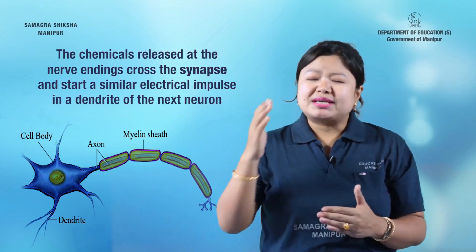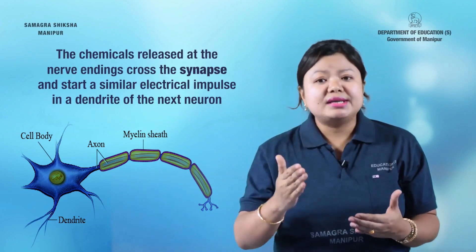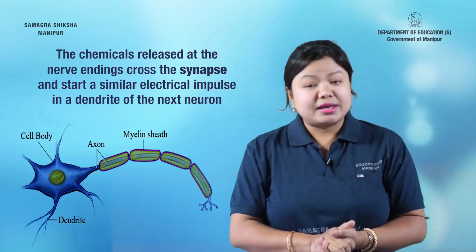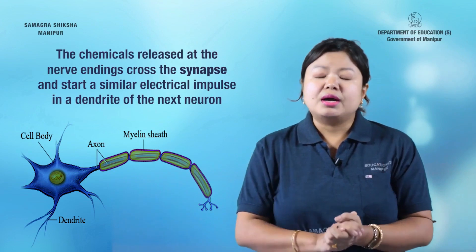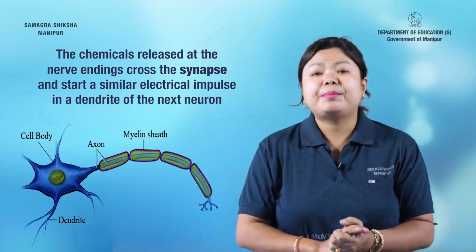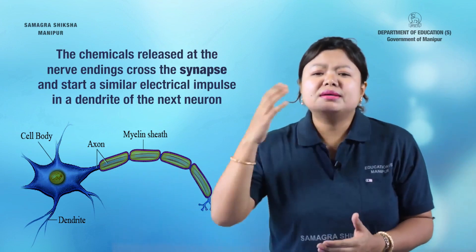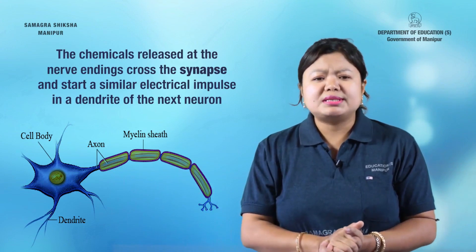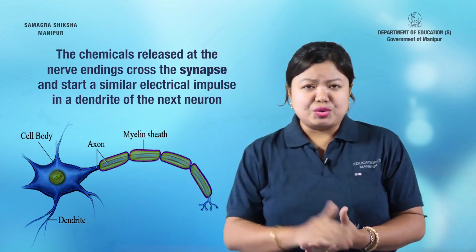The chemicals released at the nerve endings cross the synapse — the gap between two neurons. This then starts a similar electrical impulse in the dendrite of the next neuron.